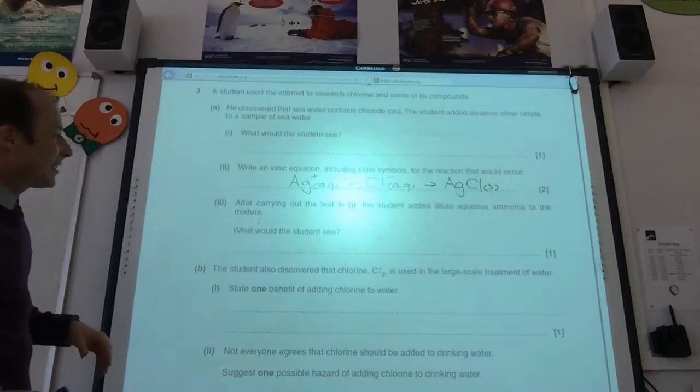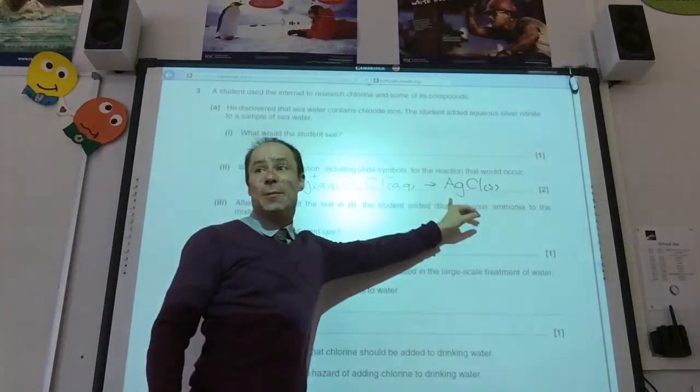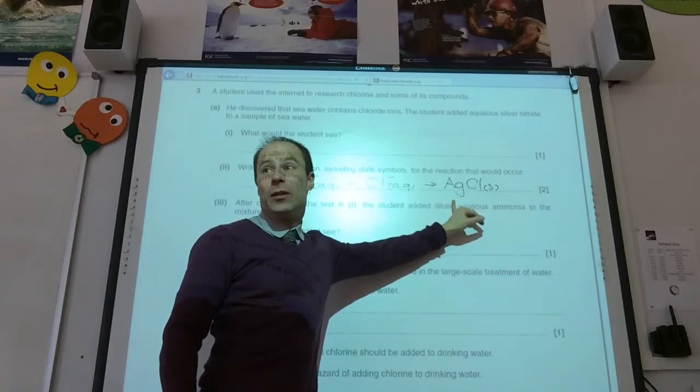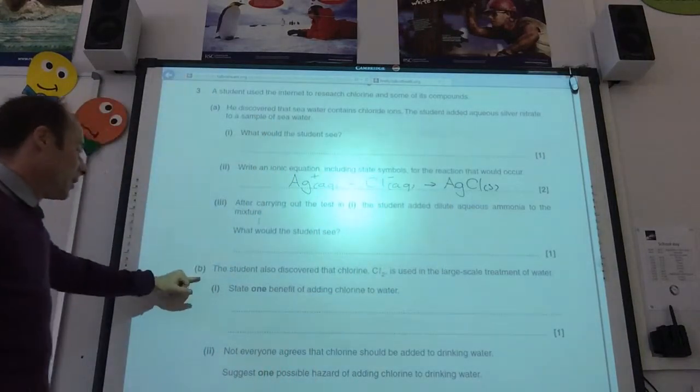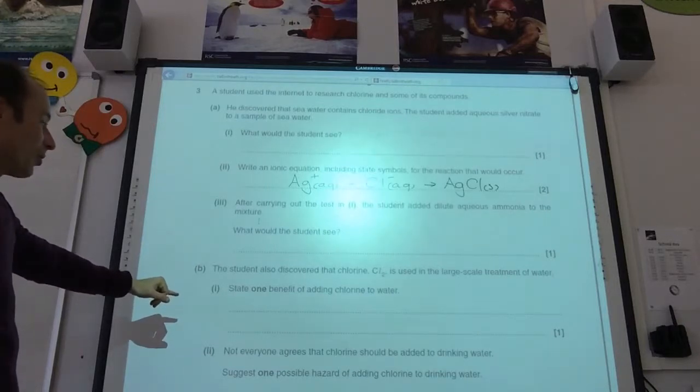After carrying out the test, he added dilute aqueous ammonia. What would he see? He would see the white precipitate dissolve. So, the white precipitate would dissolve.